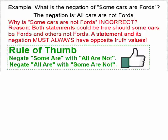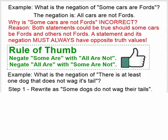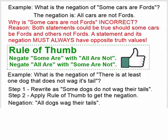So let's apply this rule to the following example: what is the negation of 'there is at least one dog that does not wag its tail'? To apply this rule of thumb, I'm going to rewrite this statement in the form 'some are' or 'some are not.' We rewrite it as 'some dogs do not wag their tails,' because that's the same as 'there is at least one dog that does not wag its tail.' Now, since it's in the form 'some do not,' we negate it with 'all do.' And our negation is: all dogs wag their tails.